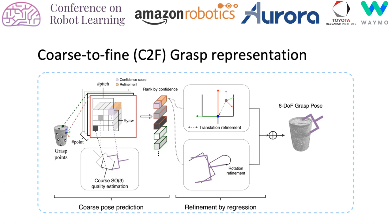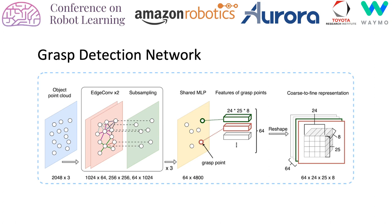The GDN selects some grasp points and predicts the 3D feature volumes. Each feature volume contains multiple coarse grasps and the residuals to refine the grasp. The combination of the coarse grasp and the residuals is the final result.